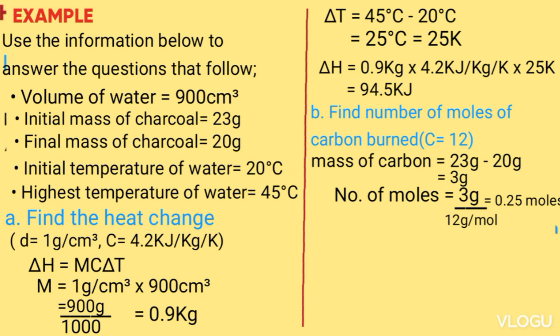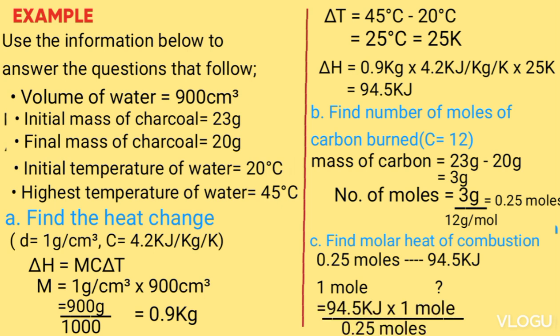Part c: Find the molar heat of combustion. That will be obtained by 0.25 moles given 94.5 kilojoules, what about 1 mole? Cross multiply gets 94.5 kilojoules times 1 mole over 0.25 moles, gives you 378 kilojoules per mole. The negative sign is because there was a temperature rise during the reaction.